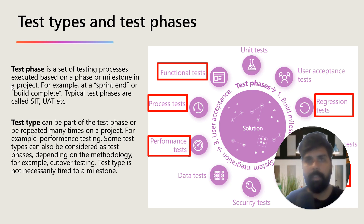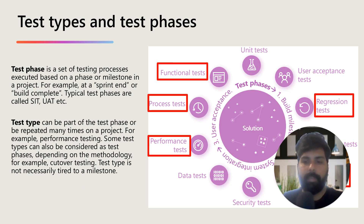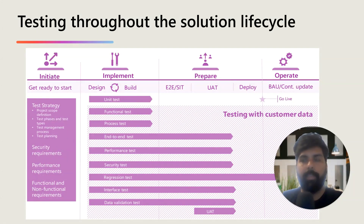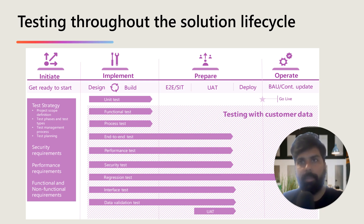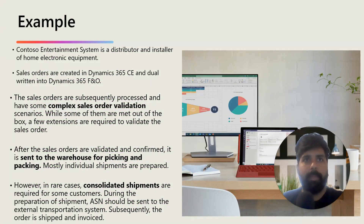Let's go to the next slide and understand with an example how we can perform these different tests in the project cycle. These different test types are based on the different project phases. You are responsible for the functional test, which is part of the design and build phase; the process test and end-to-end test run from design and build through UAT; and then the performance and regression tests.